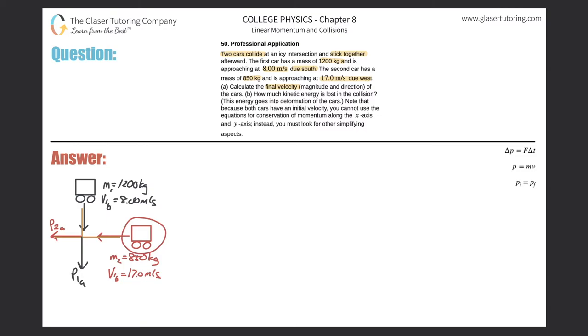Now remember, momentum is conserved. So whatever P1B is, meaning before the collision, that should equal P1A. And then whatever P2B is, whatever the momentum is coming into the collision, should be also the momentum after. So actually, I can make those two relationships. I can say P1B has to equal P1A, and P2B equals P2A. It's just conservation of momentum.